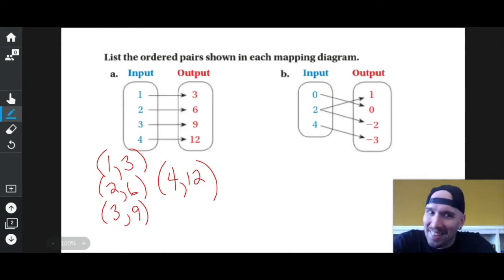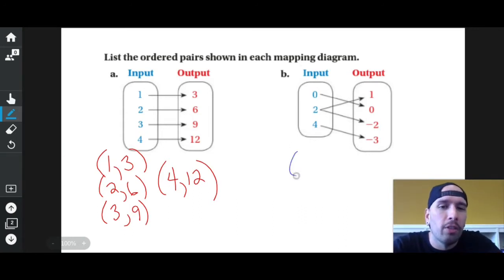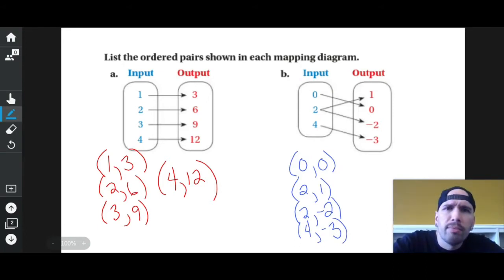Similarly, I have zero going to zero, which means I have the point (0, 0). I have two going to one, which means I have the point (2, 1). I have two going to negative two, which means I have the point (2, -2). And I have four going to negative three, which means I have the point (4, -3). Easy, easy.